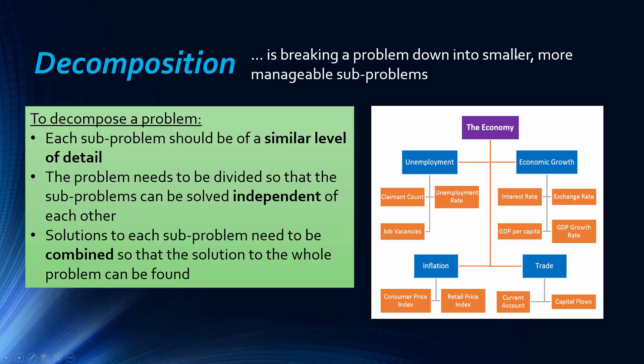And the problem should be divided that they can be solved independently. So here you'd look at each of them independently, although in economics it's not as straightforward as that, so that's why it's not a very good example. But the point is, at the end, all the solutions to each sub-problem need to be combined so that the solution to the whole problem can be found. So those are the three steps that should really be met if you want to be good at this.